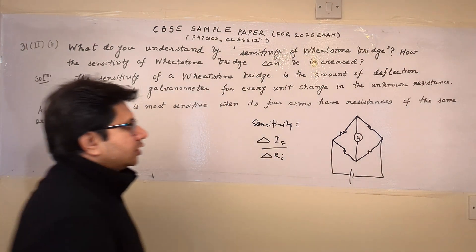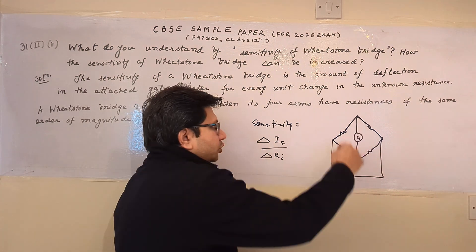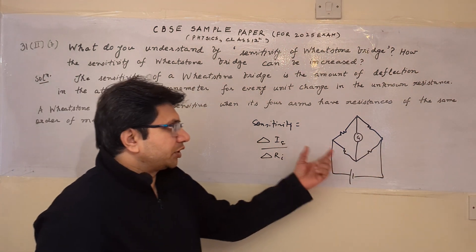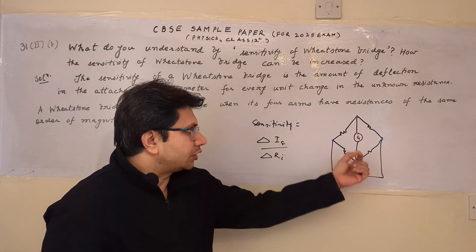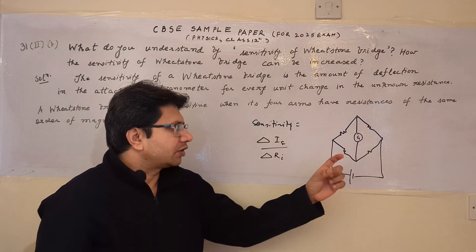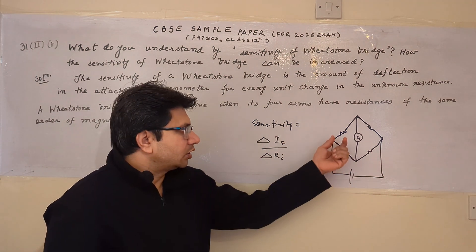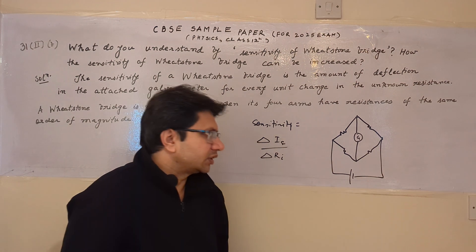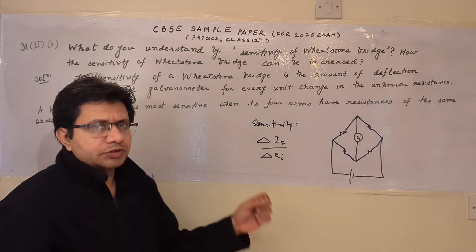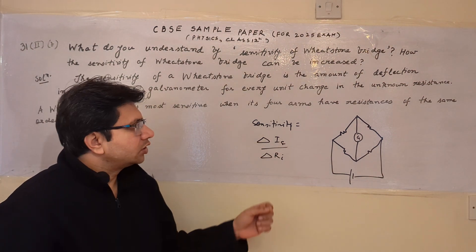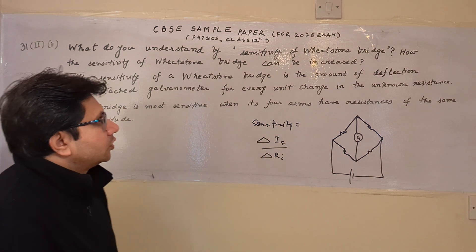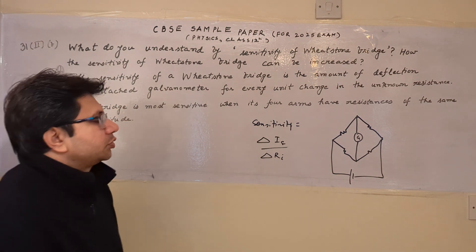To increase the sensitivity, we have to use resistances of comparable value — meaning nearly the same value. There should not be a very vast difference between the orders of magnitude of these particular resistances. That is the main point to consider in order to increase the sensitivity of the Wheatstone bridge.